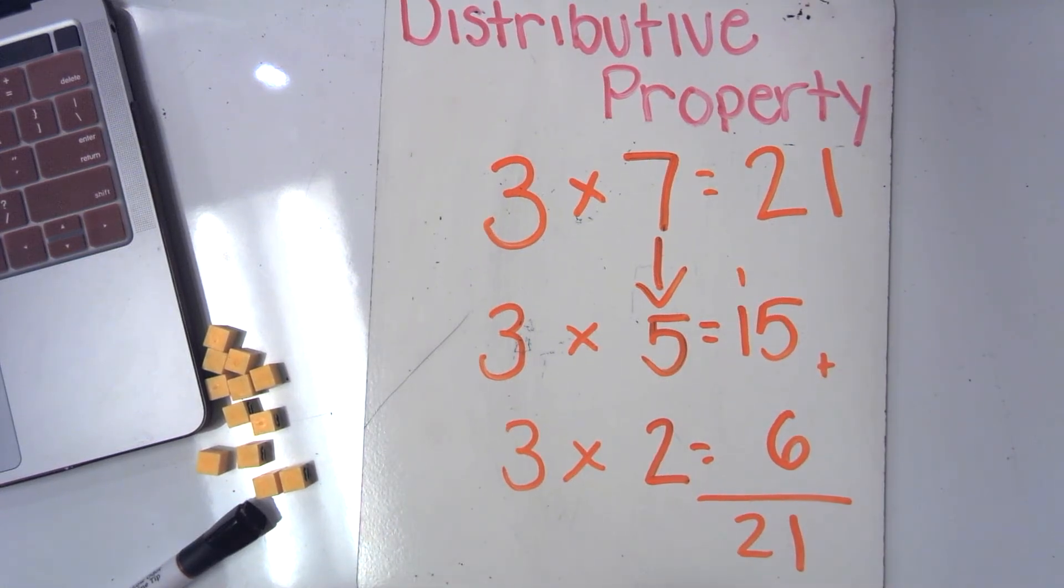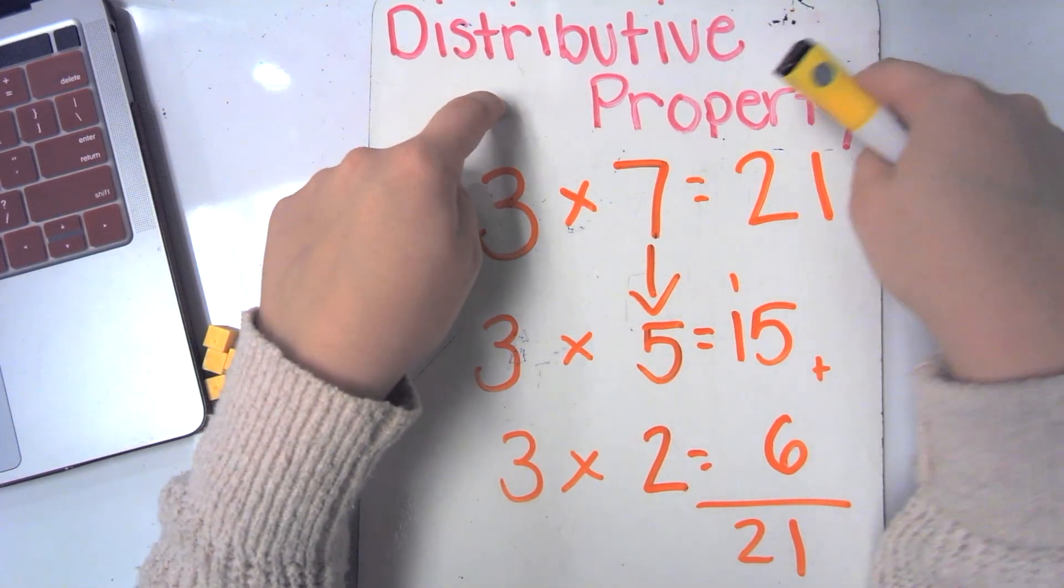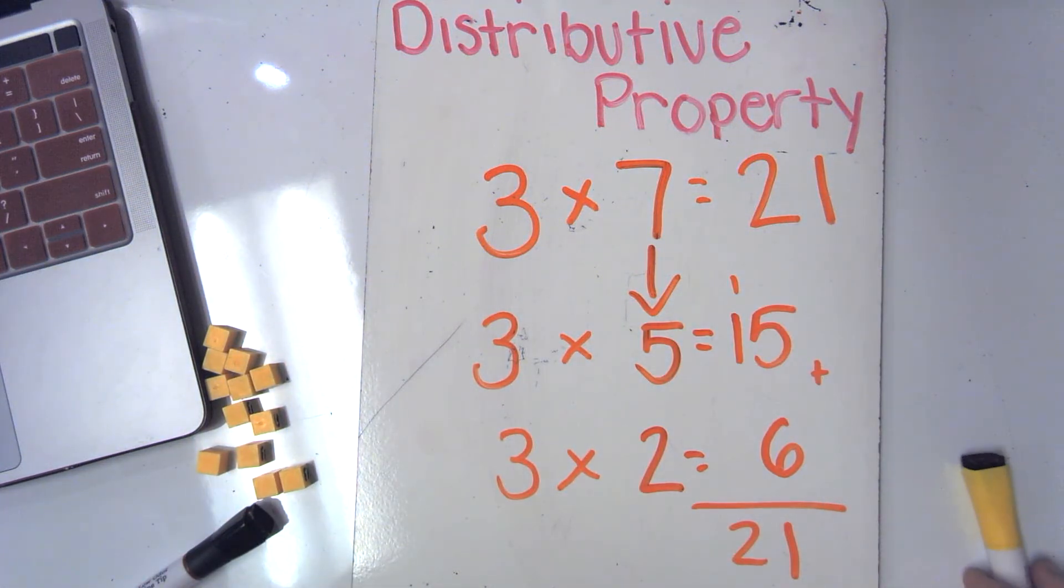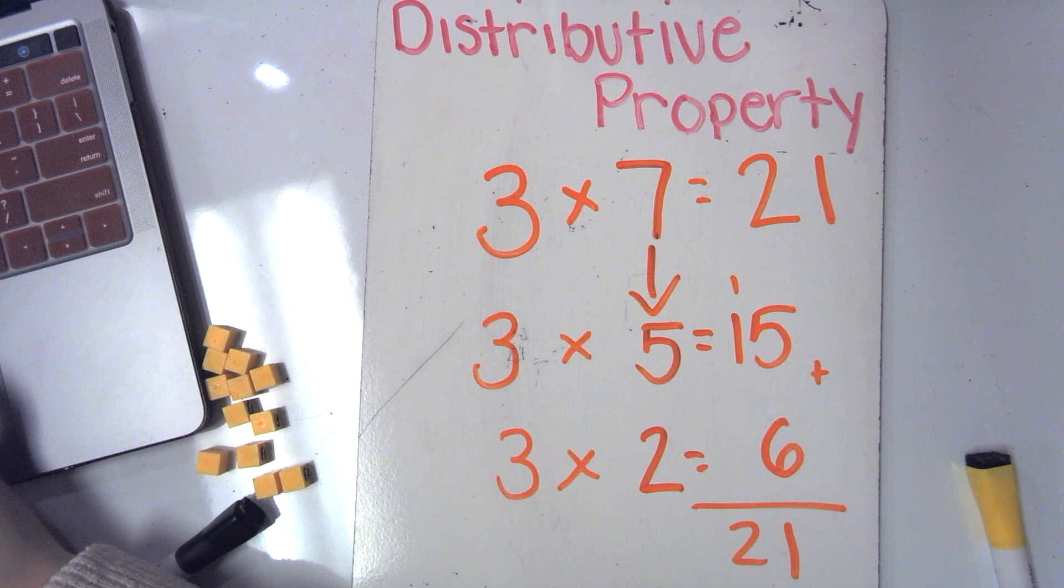Okay, now boys and girls, I've done three examples with you. When you get a difficult equation, don't stress. Use the distributive property to break it apart into two smaller equations and then add them back together. Now I want you to go back into Google Classroom and try this on your own.